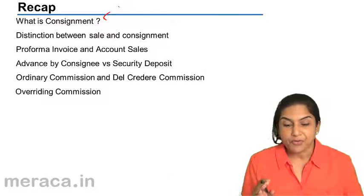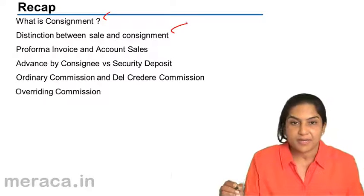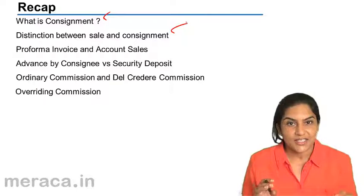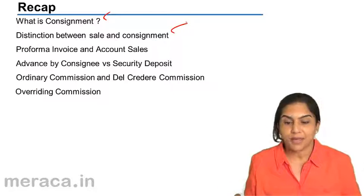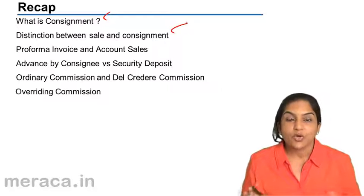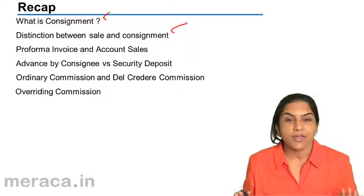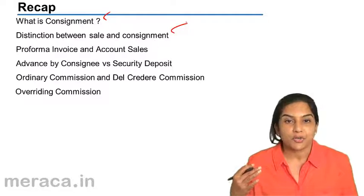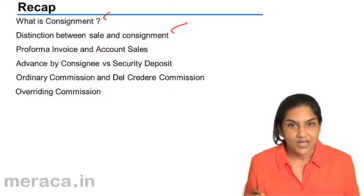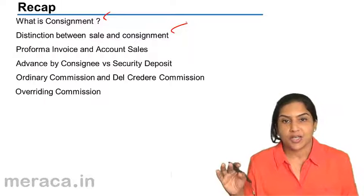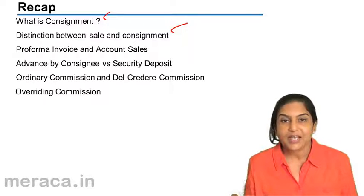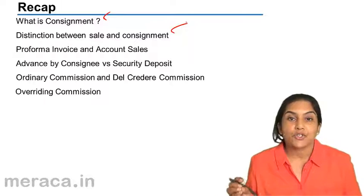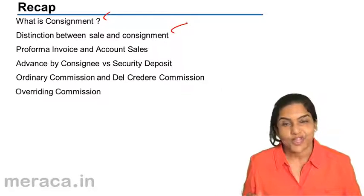We then understood the difference between a sale and a consignment. The basic difference is that in a sale, the ownership of the goods is transferred to the buyer. But in consignment, only goods are physically sent, but ownership is not transferred. If goods are sent to the consignee and the consignee is not able to sell them, the consignee can return them to the consignor. If goods are lost in the go-down of the consignee, the loss is borne by the consignor because the goods continue to belong to the consignor.